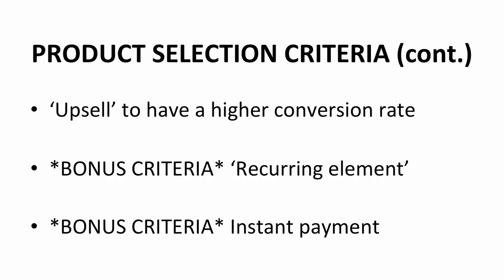A bonus criterion would be a commission that has a recurring element. It means that the vendor will commission you monthly. For example, if it's a membership website and a monthly fee is required, you'll be paid monthly as well.